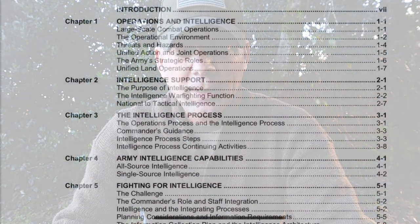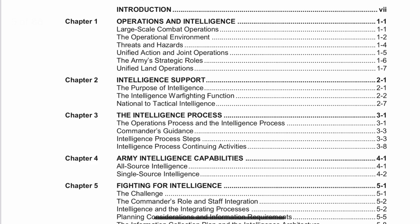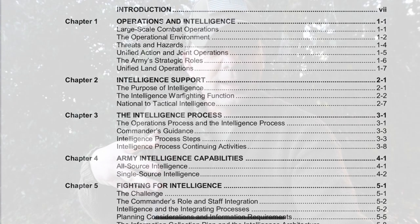ADP 2-0 is intelligence. The easiest way to remember that is the number two — just think about S2, it's intel. Looking at the table of contents, you only have five chapters: Chapter 1 is Operations and Intelligence, Chapter 2 is Intel Support, Chapter 3 is the Intel Process, Chapter 4 is Intel Capabilities, and Chapter 5 is Fighting for Intelligence. It's broad in scope and not going to dig into the weeds on anything in particular.